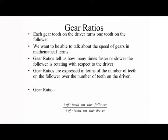Gear Ratios: each gear tooth on the driver turns one tooth on the follower. We want to be able to talk about the speed of gears in mathematical terms. Gear ratios tell us how many times faster or slower the follower is rotating with respect to the driver. Gear ratio equals the number of teeth on the follower over the number of teeth on the driver.